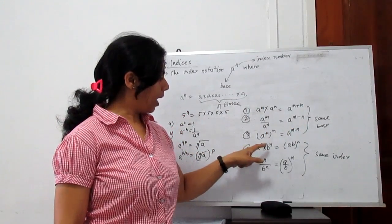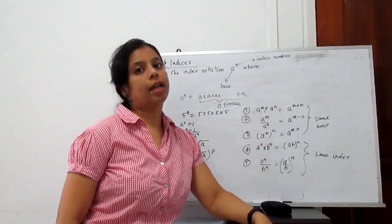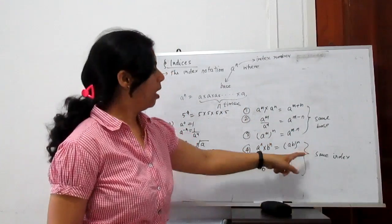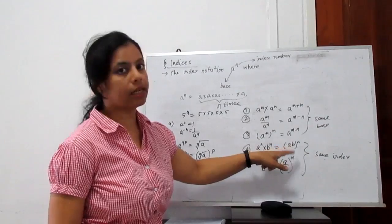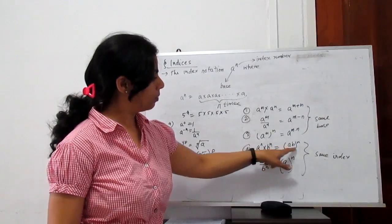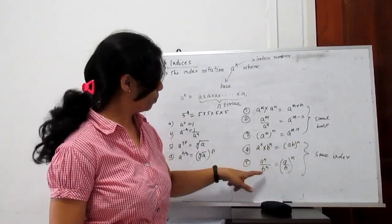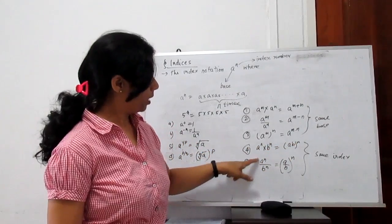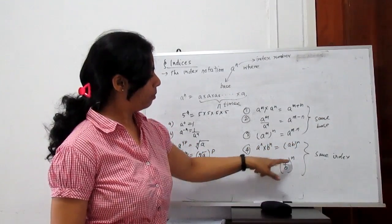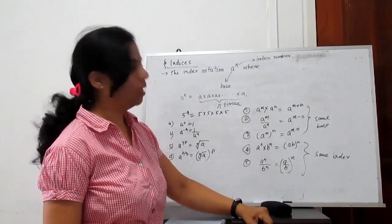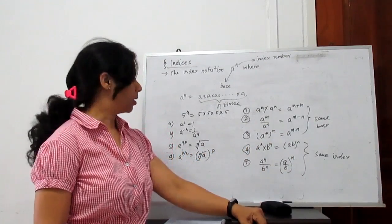For a to the power n times b to the power n, the index is the same but the base is different. We can rewrite this as a times b whole to the power n. Similarly in division, a by b whole to the power n. These are the simple laws for indices.